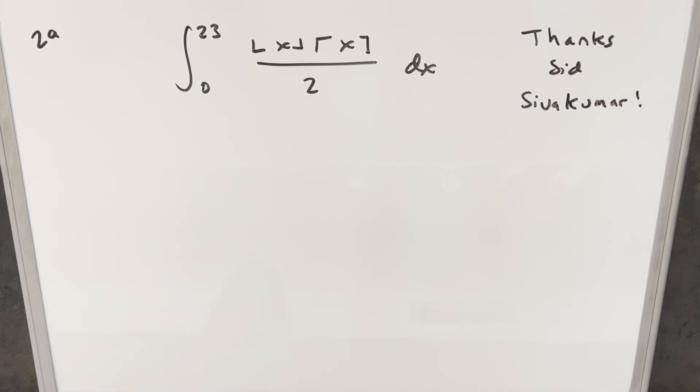Okay, we have another good integral today. We've got the integral from 0 to 23 of the floor of x times the ceiling of x over 2, dx.